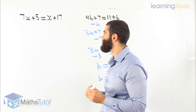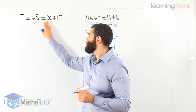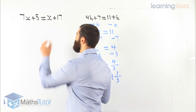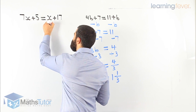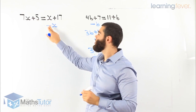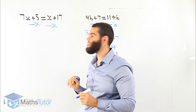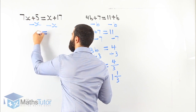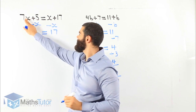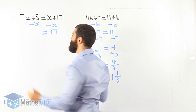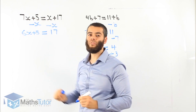7x plus 5 equals x plus 17. Again, we have pronumerals on both sides. We want to get rid of the x on the right — start with that one first. Minus x, because it's positive x. Minus x on one side, minus x on the other. x minus x is gone, we're left with 17. 7x take away x is 6x, plus 5. That's our equation.